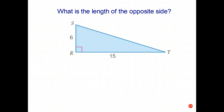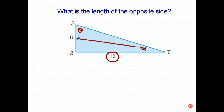Just to finish off — what is the length of the opposite side? Well, we can't answer that yet, because we don't know which angle we're working with. We have to have an angle marked. If the angle we're interested in is that one, then the opposite side is 15. But if the angle we know is this one down here, then the opposite side would be 6. So you can't identify the opposite side or the adjacent side unless you know which angle you're working with. We're getting close to actually finding unknown sides and angles, and we'll probably start doing that in the next video.